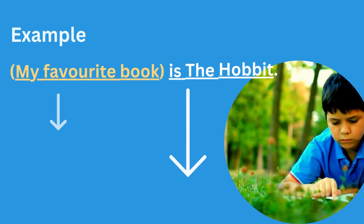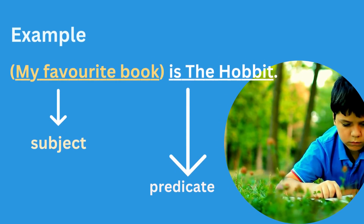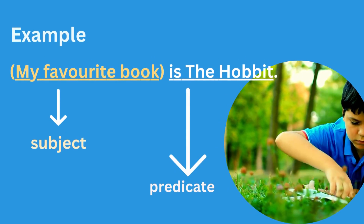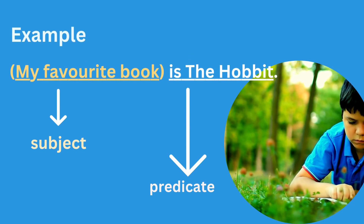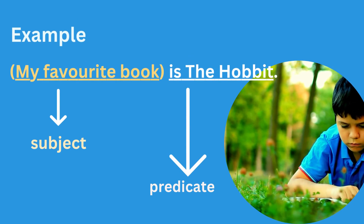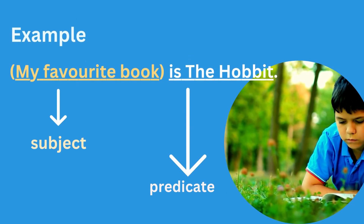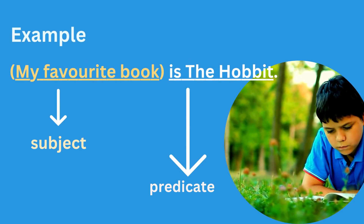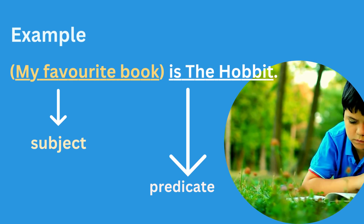Last example: my favorite book is The Hobbit. The subject of the sentence is my favorite book, because that is what the sentence is about. The predicate is is The Hobbit. The Hobbit is the name of my favorite book.